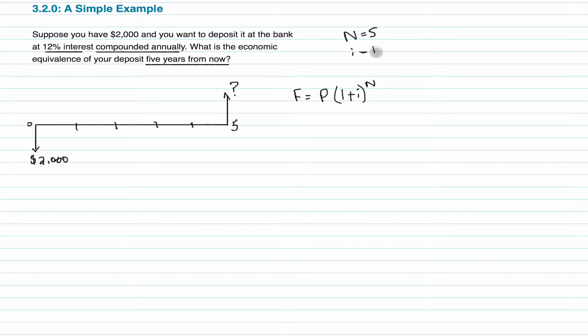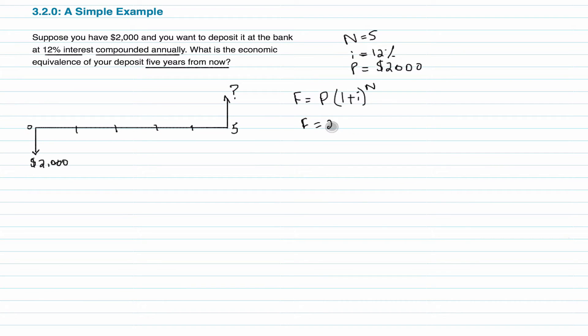The number of periods is equal to 5. So n is equal to 5, i is equal to 12%, and P is equal to $2,000. So F is equal to 2,000 times 1 plus 0.12, convert the percentage to decimal, to the power of 5, which equals to this value over here. $3,524.68.